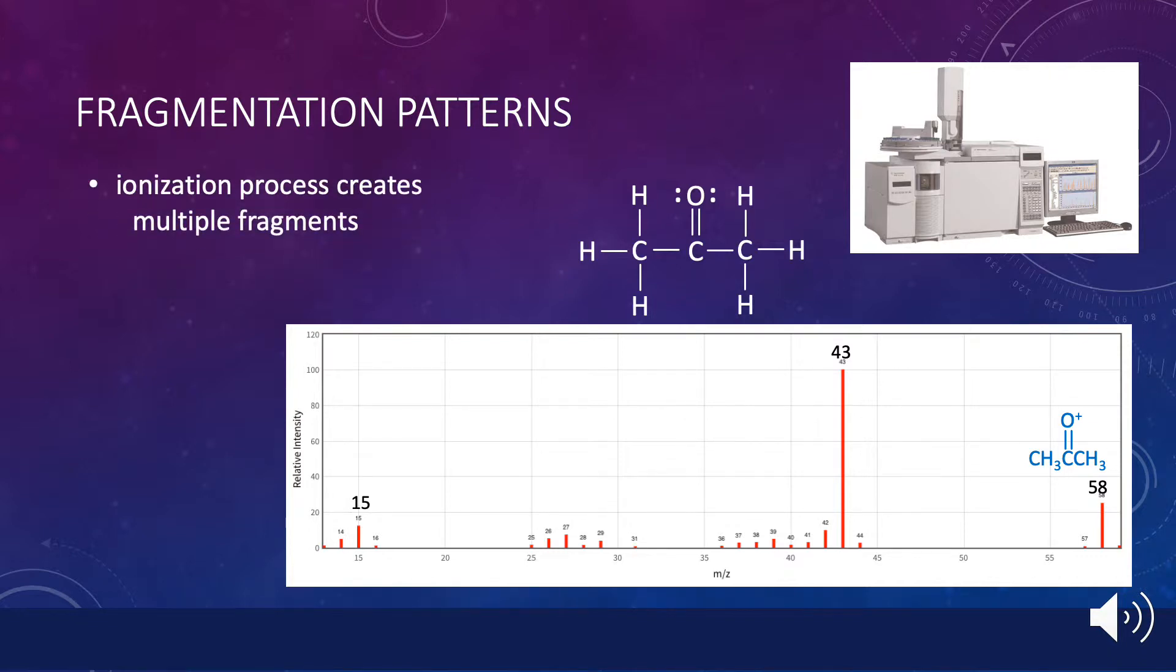As we noted in the first lab exercise, the ionization process often produces multiple fragments, which contribute to a pattern of peaks with various masses. Although it is not always possible to predict the likely fragments that will arise from this process, it is not uncommon for the weakest bond in the molecule to be broken, leading to two fragments, either of which could end up as a positive ion. This is the case for acetone, in which the weakest bonds are the two carbon-carbon bonds.